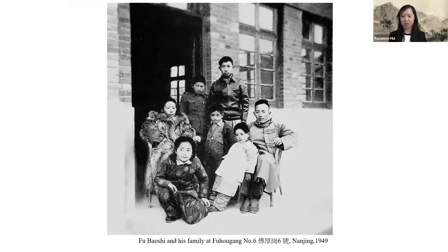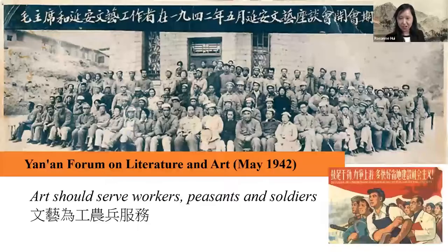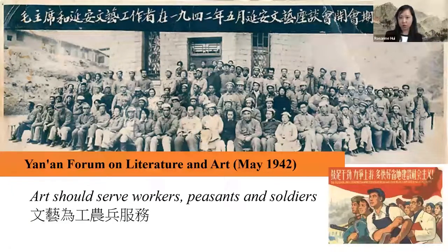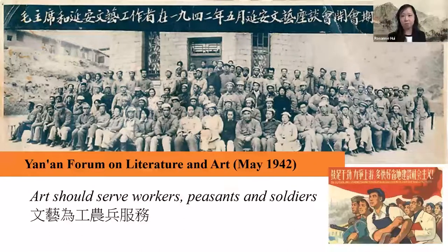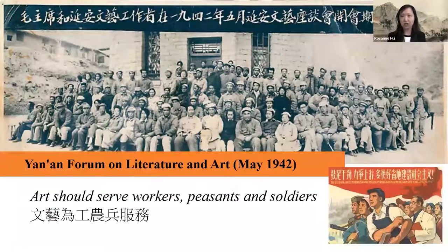Another reason he stayed was that he had just bought land in Hou Zaigang No. 6 in Nanjing, next to his friends Guo Youshou and Xu Beihong, where he built a new home. After the People's Republic of China was established in 1949, much had to be done to recover from war. The new leadership vowed to rebuild the country and it became apparent that artists were to become part of the country's collective effort.